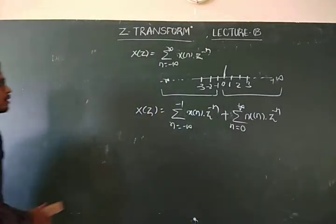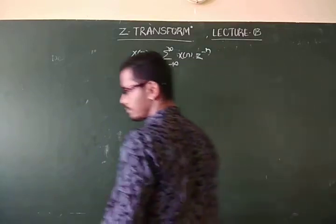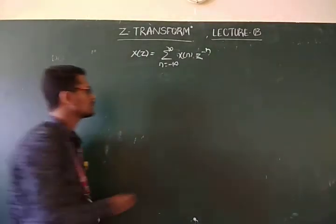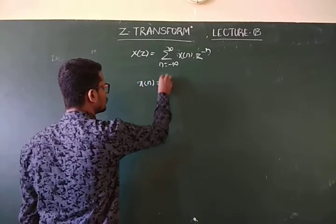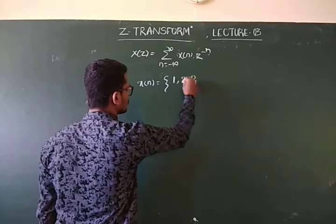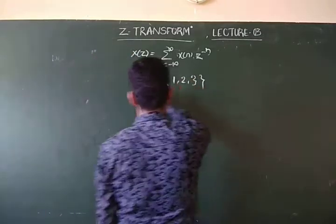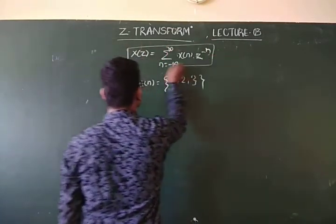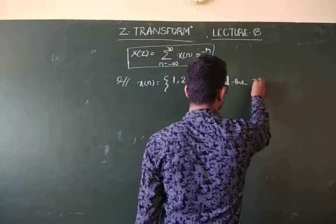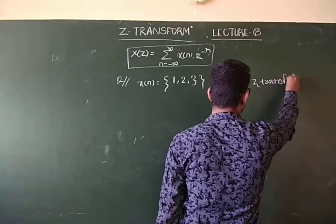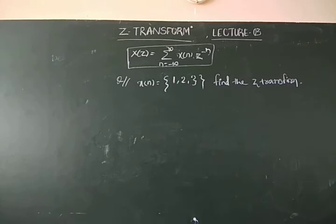Let's continue with some problems. If x(n) is equal to the sequence {1, 2, 3}, find X of Z.